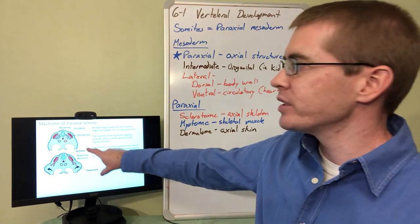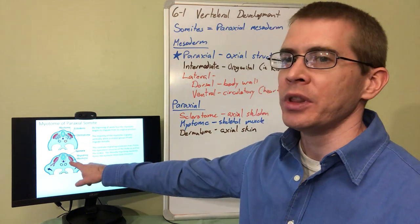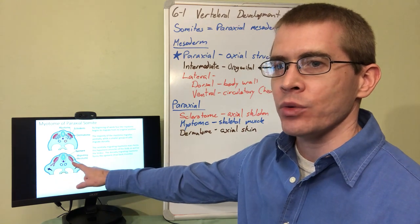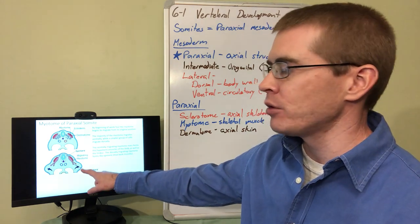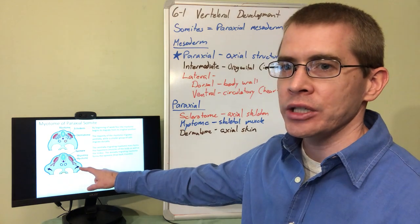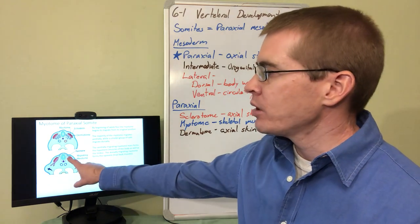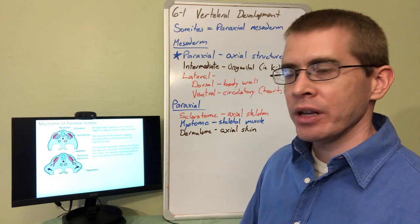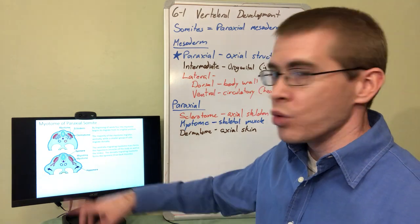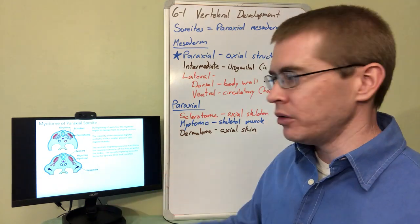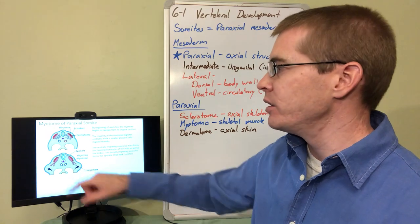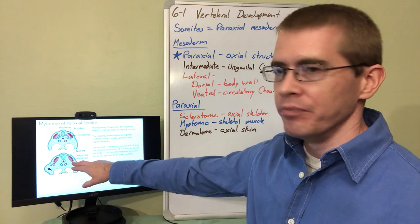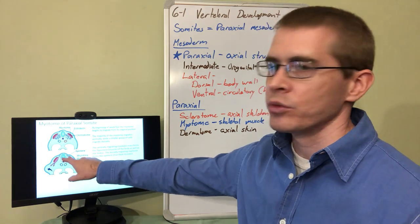Looking at the myotome, we see it will split. Some migrates dorsally and some ventrally, with some ventral migration entering the limb buds. The dorsal migration of muscle cells forms the epimere or epaxial muscles. The ventral migration forms the hypomere or hypaxial muscles, because it goes below the axis formed by the neural tube.